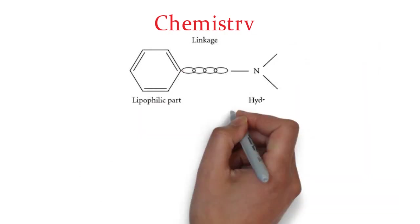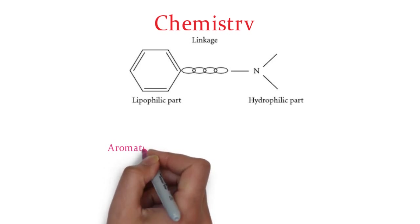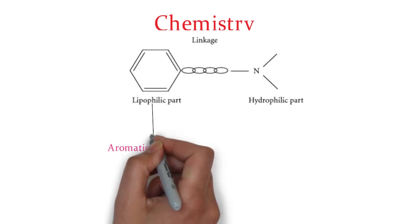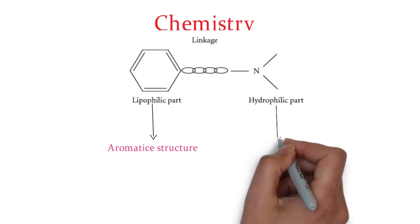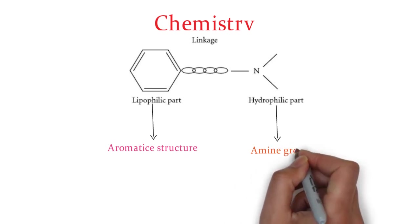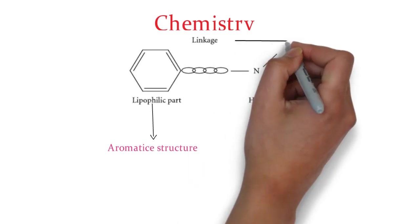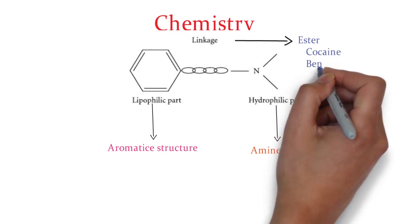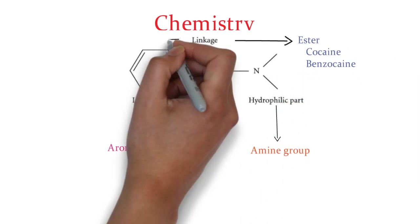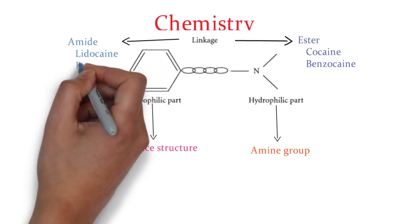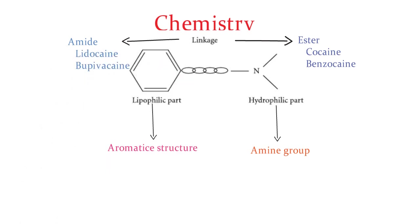Regarding the chemistry of local anesthetics, they have a lipophilic moiety attached via a linkage to a hydrophilic part. The lipophilic part is mainly an aromatic ring, and the hydrophilic part is mainly an amine group — majorly tertiary, secondary, or quaternary. These are joined by two different types of linkages: ester linkage (examples: cocaine, benzocaine, tetracaine — hydrolyzed by cholinesterase or other esterase enzymes) and amide linkage (examples: lidocaine and bupivacaine).